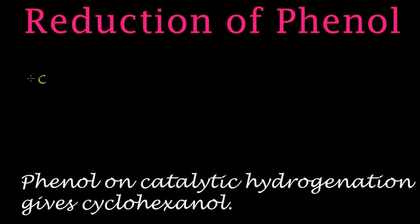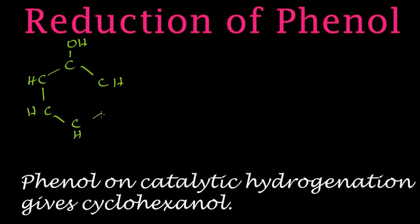Here is the skeletal structure of phenol: C-H, C-OH, C-H, C-H, C-H, C-H. There are three double bonds in the phenol structure. This is just the phenol structure that we are going to reduce.